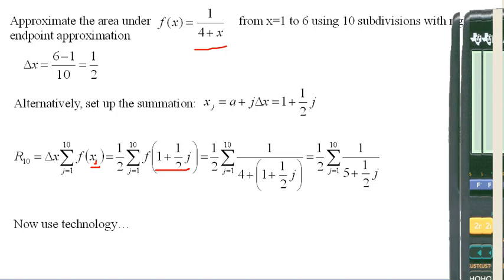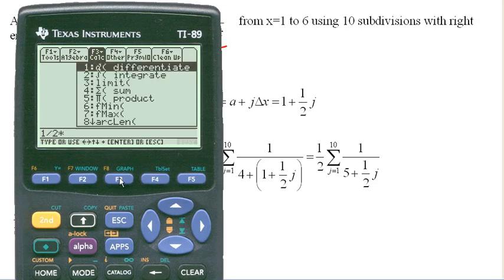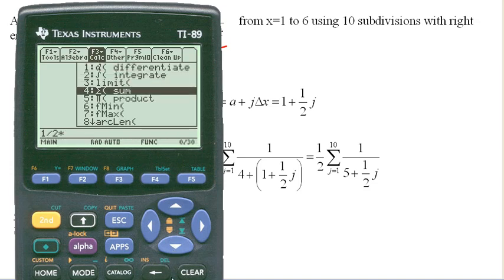So one option here is to pull out, if you have a TI-89, so we need 1/2 times the summation. And so for summation, it's in the F3 Calc menu here, sum.